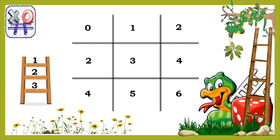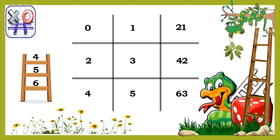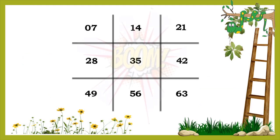Now let's use the numbers from the ladders. Place the numbers 1, 2 and 3 from the first ladder to the right of the numbers 2, 4 and 6. Place the numbers 4, 5 and 6 from the second ladder to the right of the numbers 1, 3 and 5. Place the numbers 7, 8 and 9 from the third ladder to the right of the numbers 0, 2 and 4. And boom — we have our 7 times table!